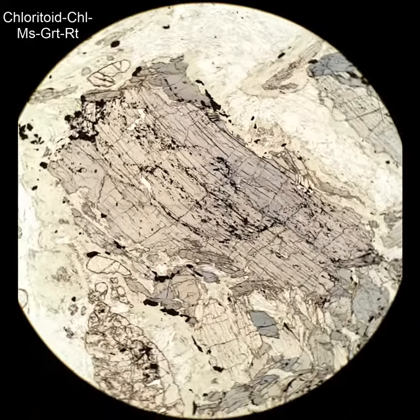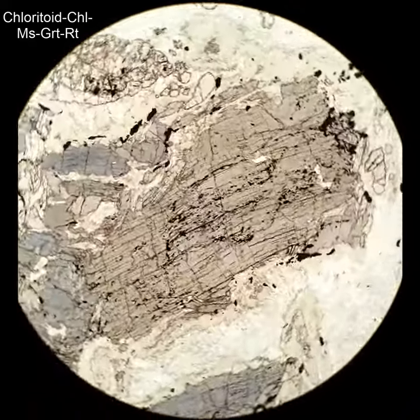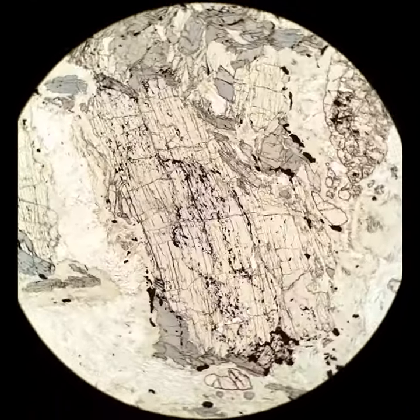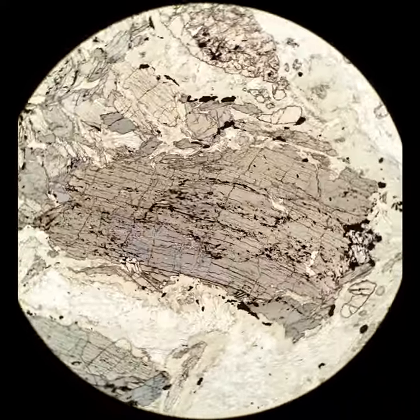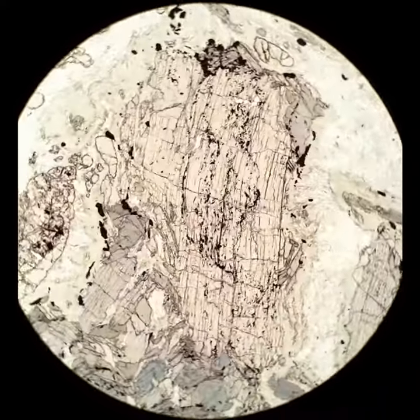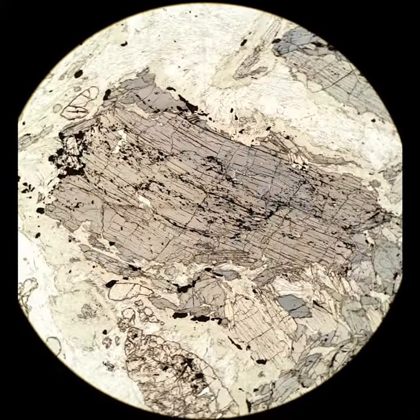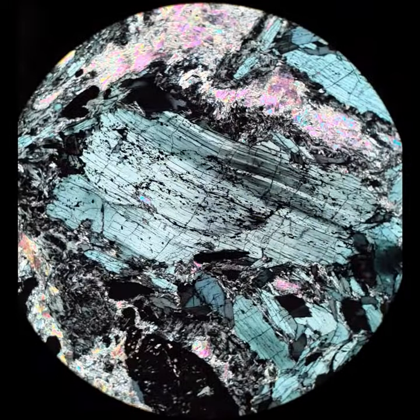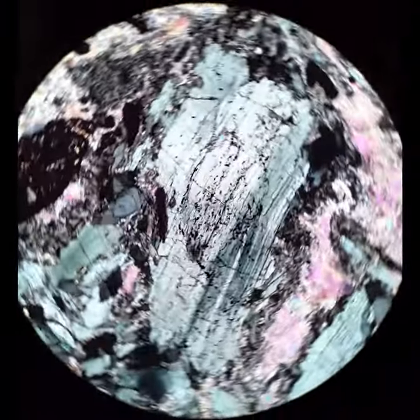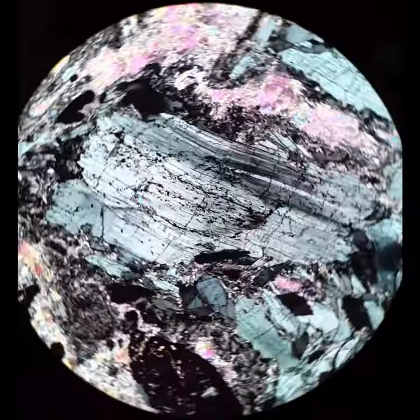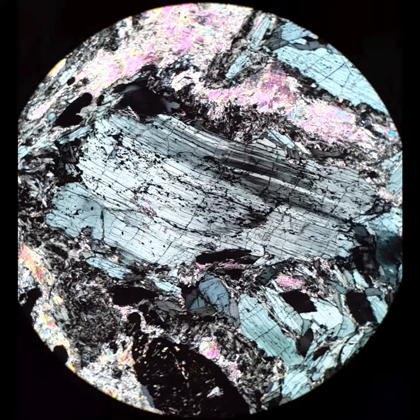This last shot of chloritoid is to show what it looks like when it's deformed. You can see high relief and the blue to sometimes greenish-blue pleochroism. When I cross the polars, you're going to see that it has this sweeping or undulatory extinction — it doesn't all go extinct at once, because the crystal has been bent. It's very similar to the behavior of kyanite, which also shows this same kind of behavior when deformed.